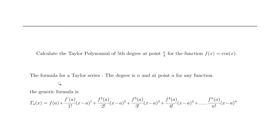The generic formula is here. Wherever we see n we substitute 5, and wherever we see a we substitute π/4. So T₅(x) is the symbol for the fifth degree Taylor polynomial.